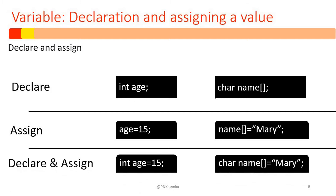If you want to declare and assign at the same time, it would be: int age equals 15, and char name equals Mary. Mary is composed of more than one character, and that makes it a string.